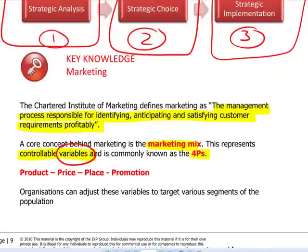These are variables — things we can change — and they're controllable, meaning within our control to change. The four Ps begin with P: product, price, place, and promotion. We can change each of these four Ps — product, price, place, and promotion — and adjust those to target each segment of the market.